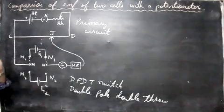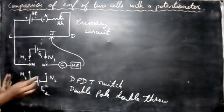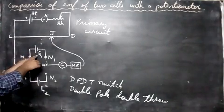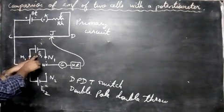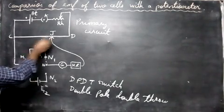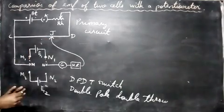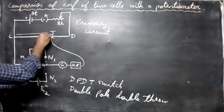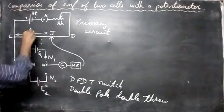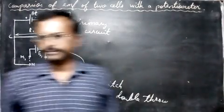Then we have a galvanometer, a high resistance, and a jockey. First what we do is we have to include the cell first, this is L1. We include the first cell and then you move the jockey left and right and find the balancing length. Let the balancing length here be L1 for the first cell.